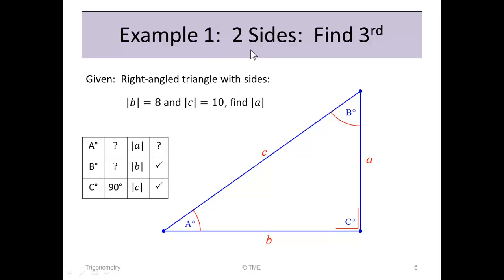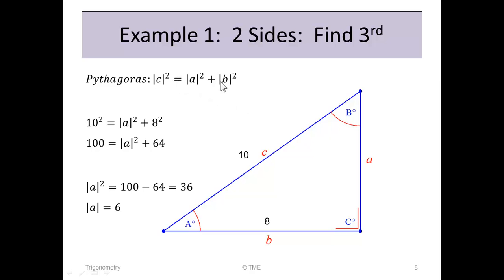Example 1. Let's consider a triangle where two sides are known. Given that it's a right-angled triangle with sides B equals 8 and C equals 10, we're asked to find A. There's no point using the angle rule because we only know one angle is 90 and can't determine the other two from that alone. So Pythagoras' rule is the rule we're going to use.